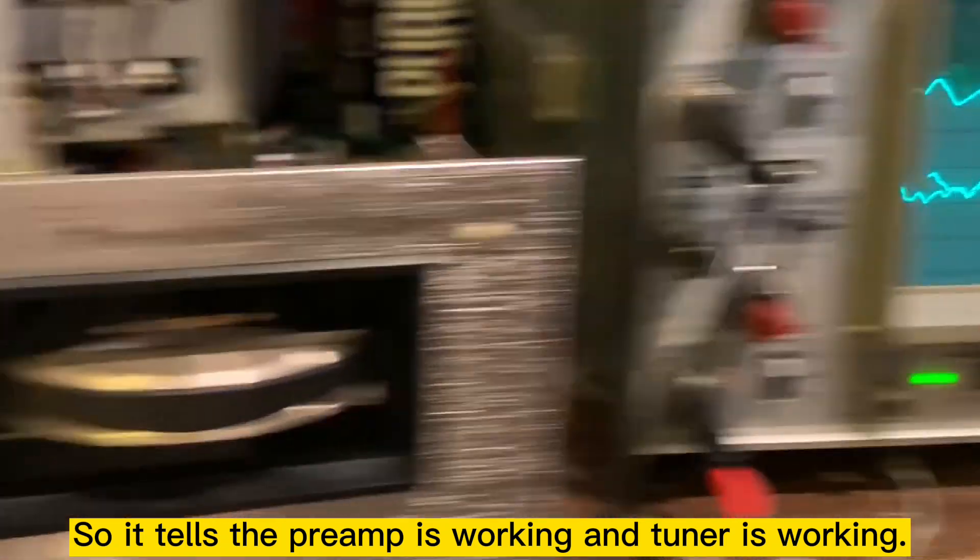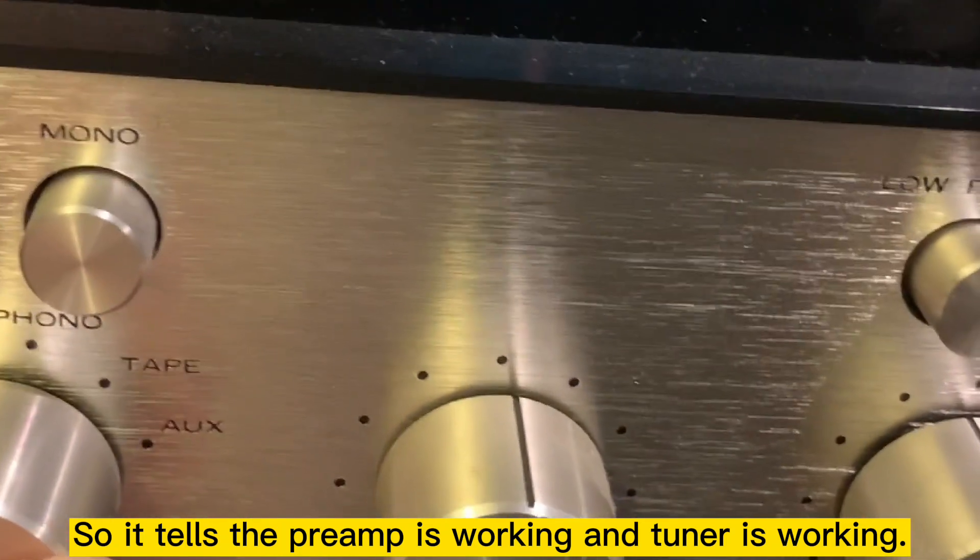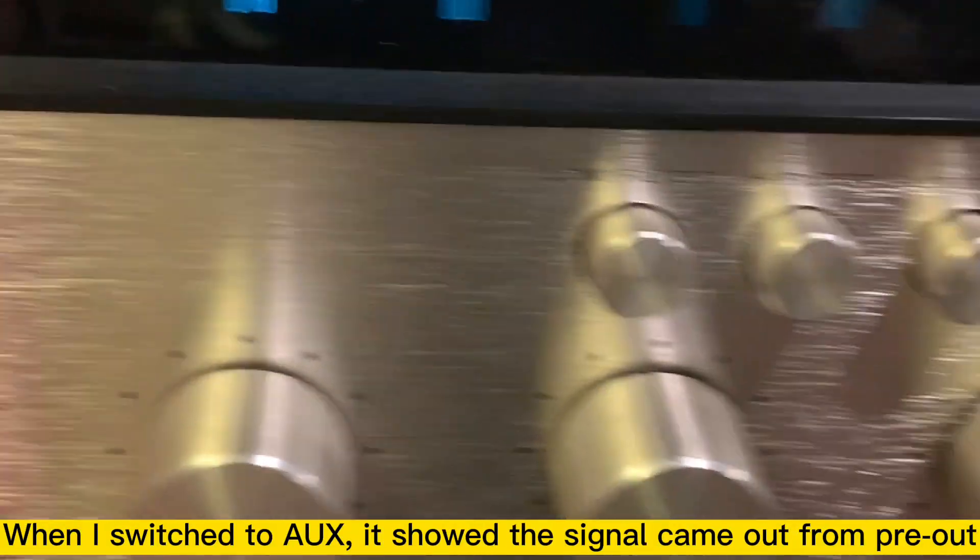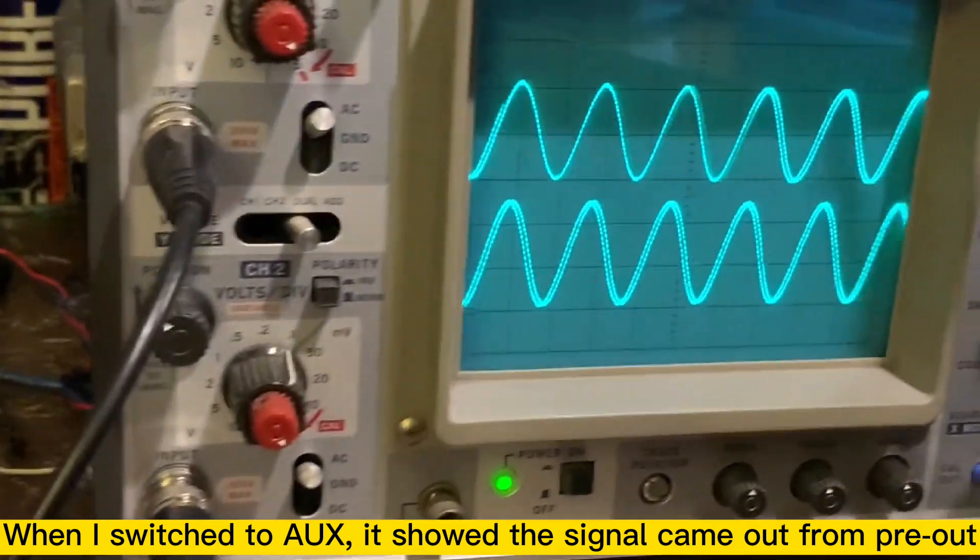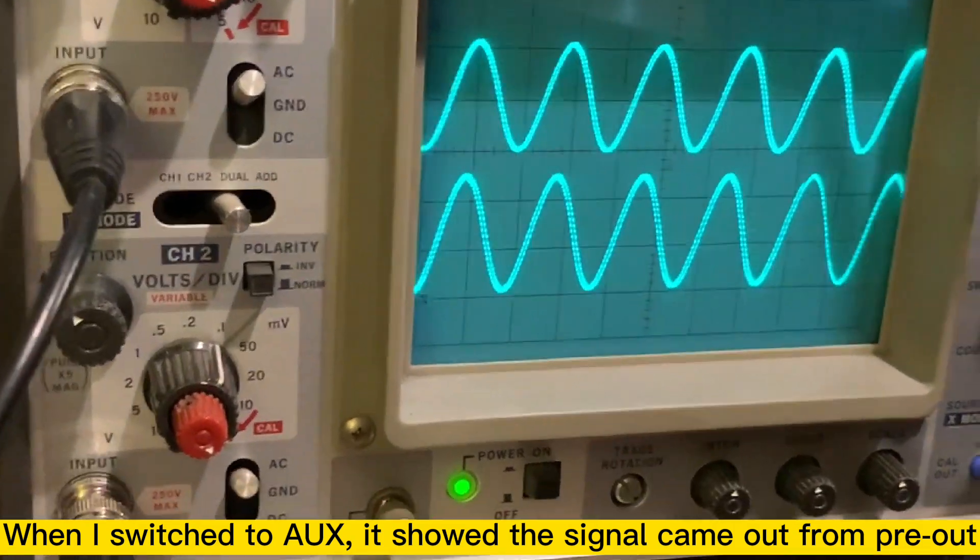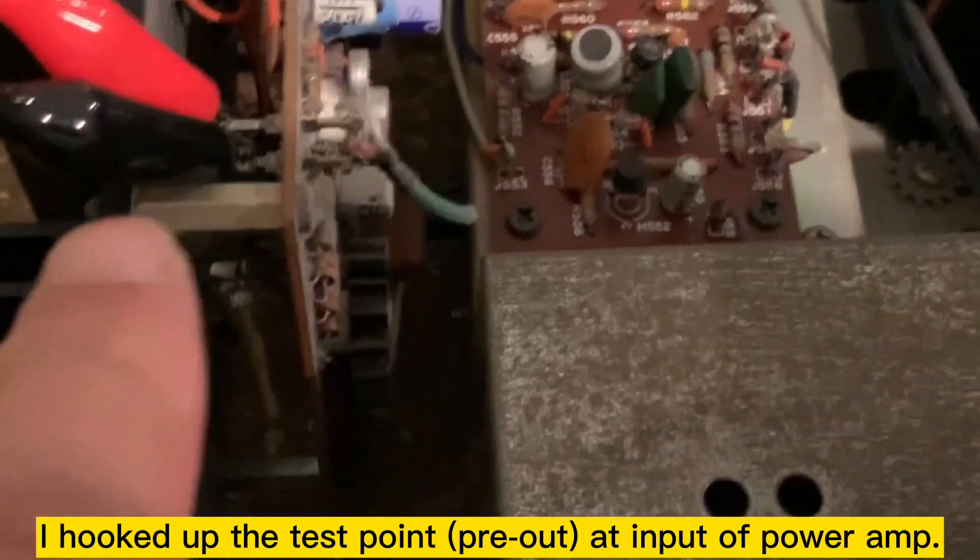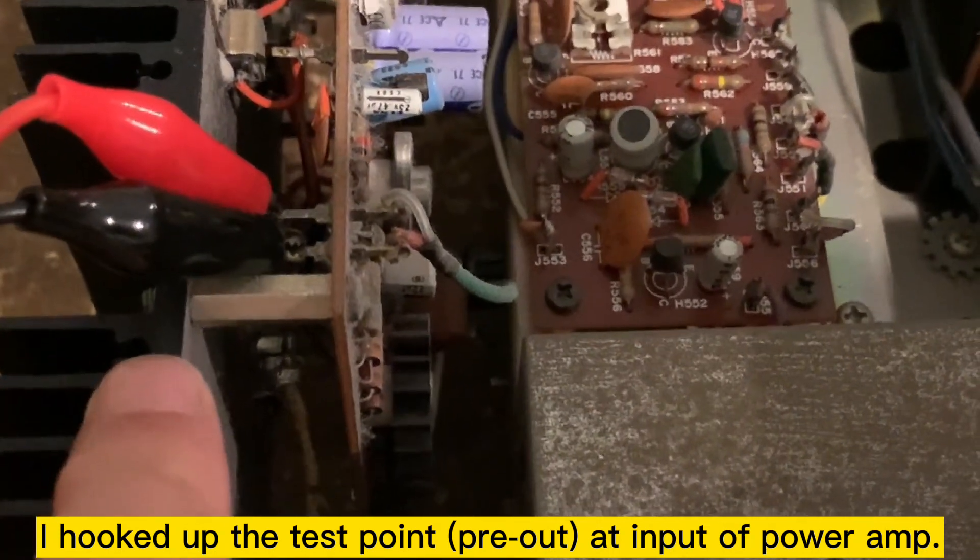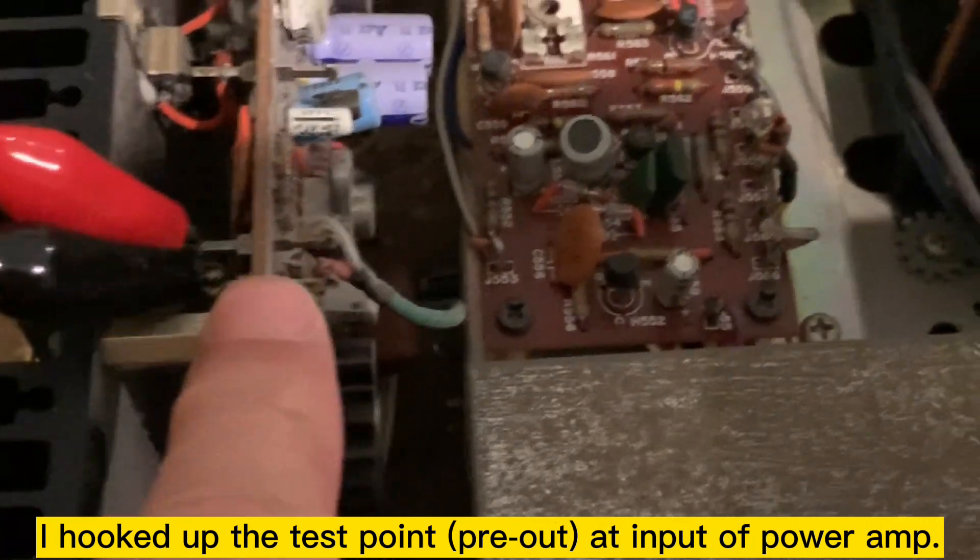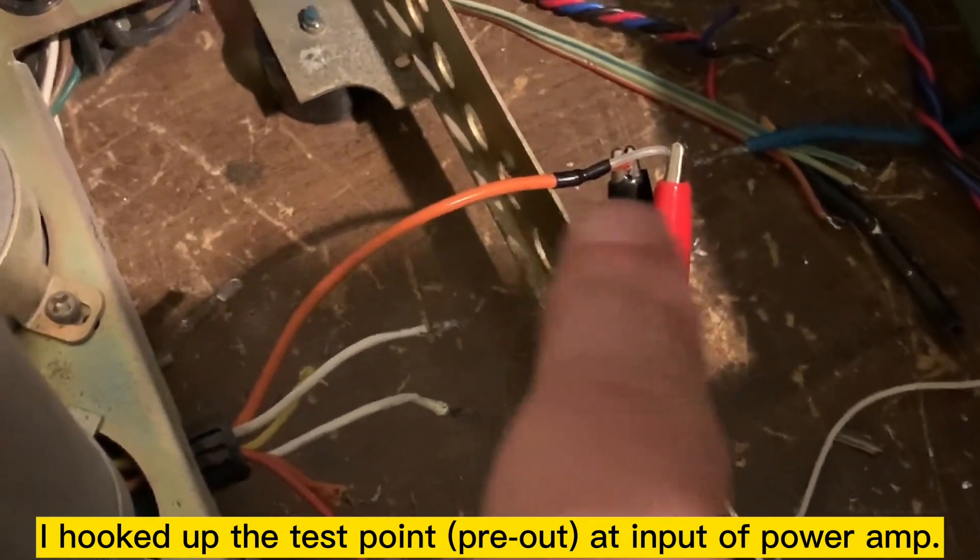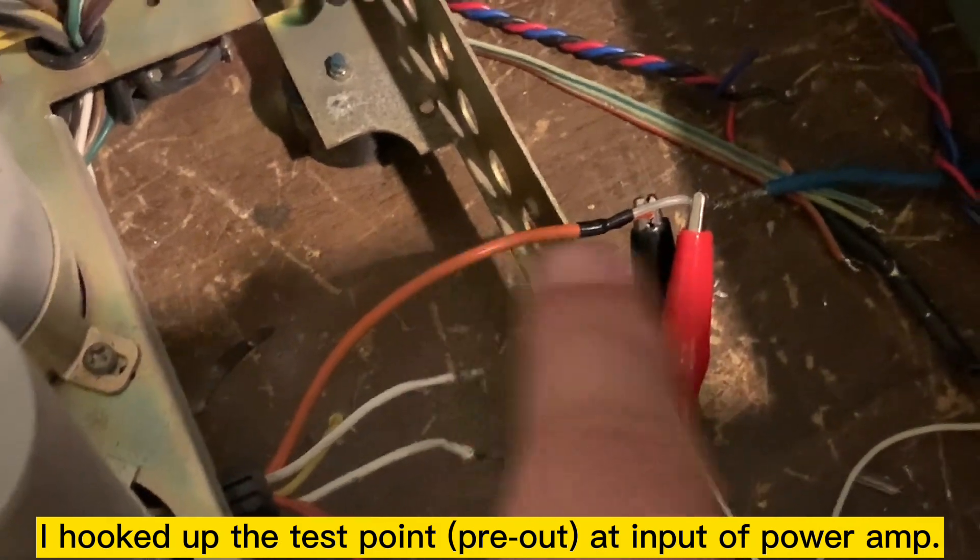Let me switch to the AUX input here. And you can see there's a signal come out to the preamp output here. So the test point I put on the preamp output, which is the input to the power amp. Same thing on this side here too. This is the input to the power amp.